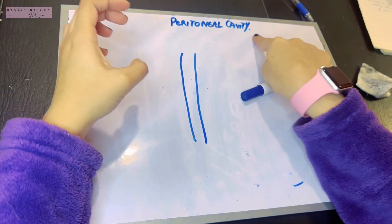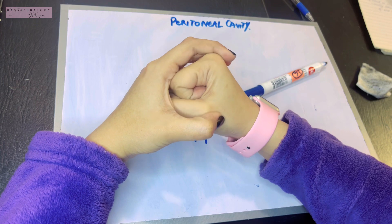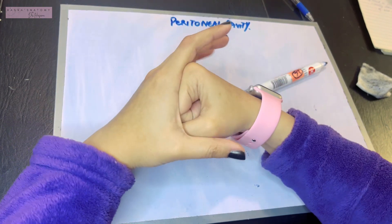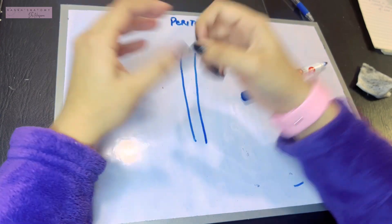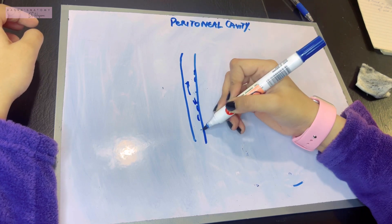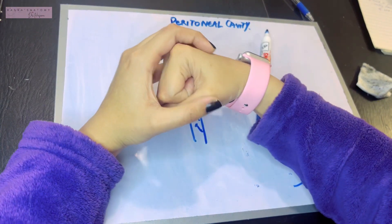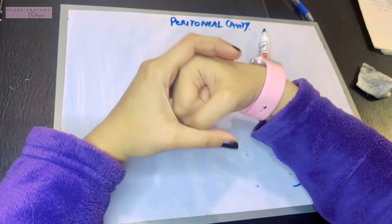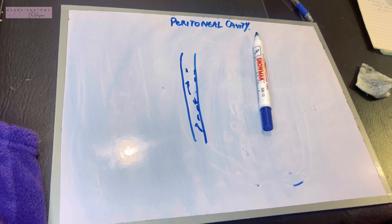Although the peritoneal cavity is collapsed normally — because your organs are so big that they occupy your entire abdomen — it is a potential space. That means if the organs were to move, they can easily do so because there is this space. The peritoneal cavity has mesothelial cells that are always secreting fluid into this cavity so that it remains lubricated, allowing your organs to easily move between the parietal and visceral layers.